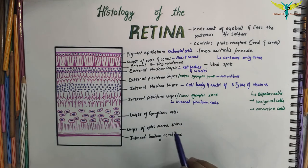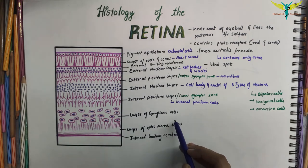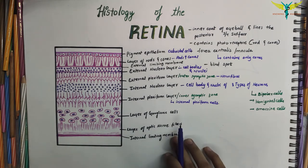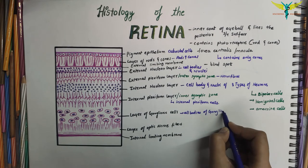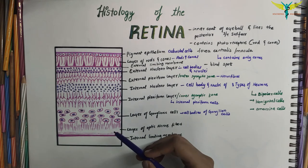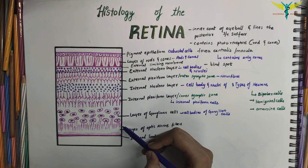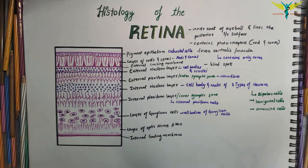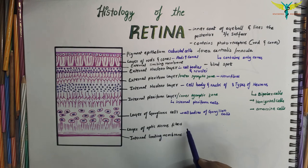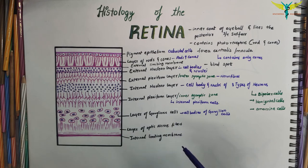The layer of ganglion cells contains the cell bodies of the ganglion cells. Each ganglion cell gives off an axon that forms a fiber to the optic nerve. The layer of optic nerve fibers is made up of axons of the ganglion cells, and these fibers converge and continue with the optic nerve.